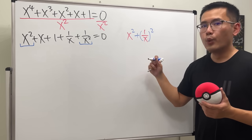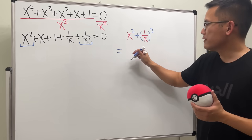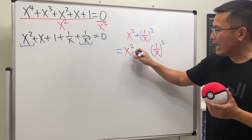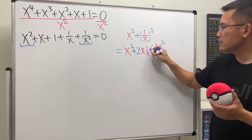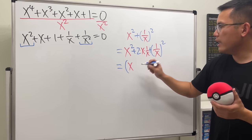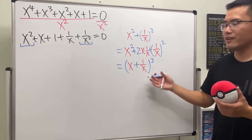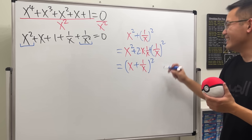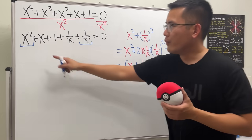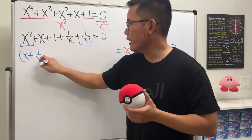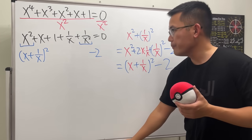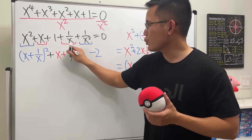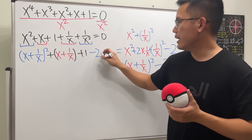We notice that x squared plus one over x squared is a sum of two squares. To complete the square, the middle term would be two times x times one over x, which is just two. So x squared plus one over x squared equals the quantity x plus one over x, squared, minus two. We substitute this in and now we also have the x plus one over x term, giving us x plus one over x squared plus x plus one over x minus one equals zero.